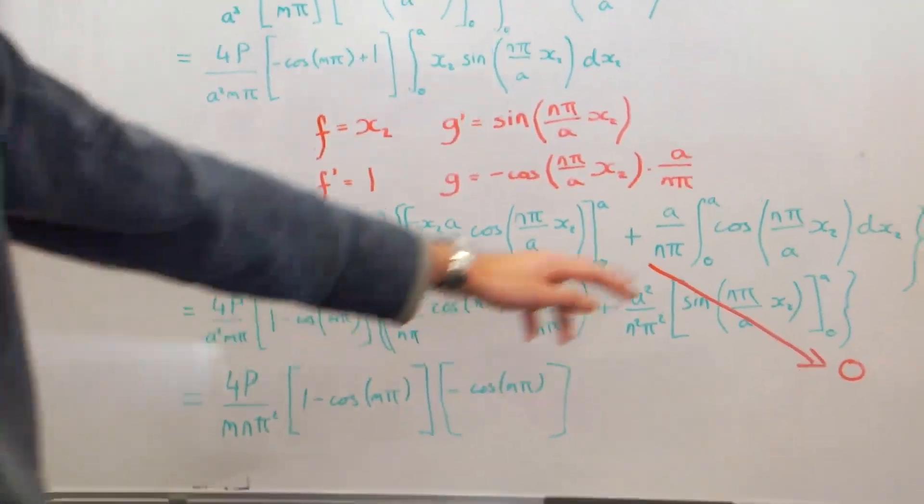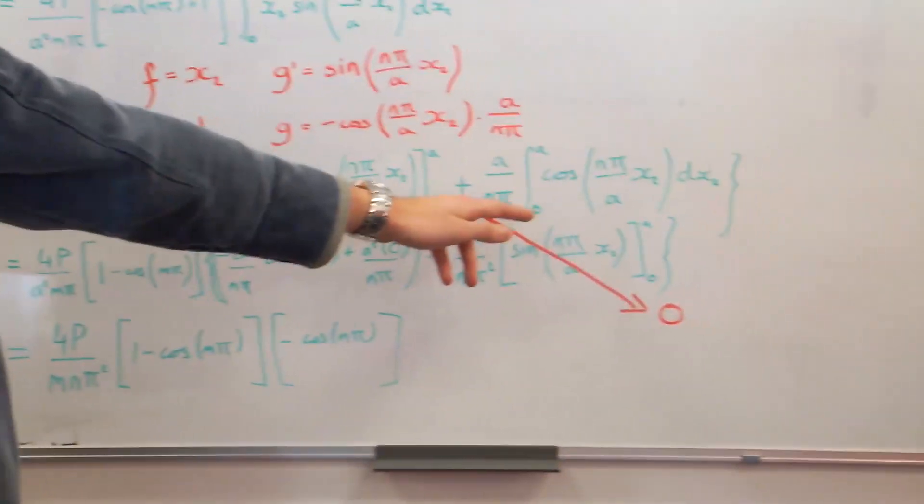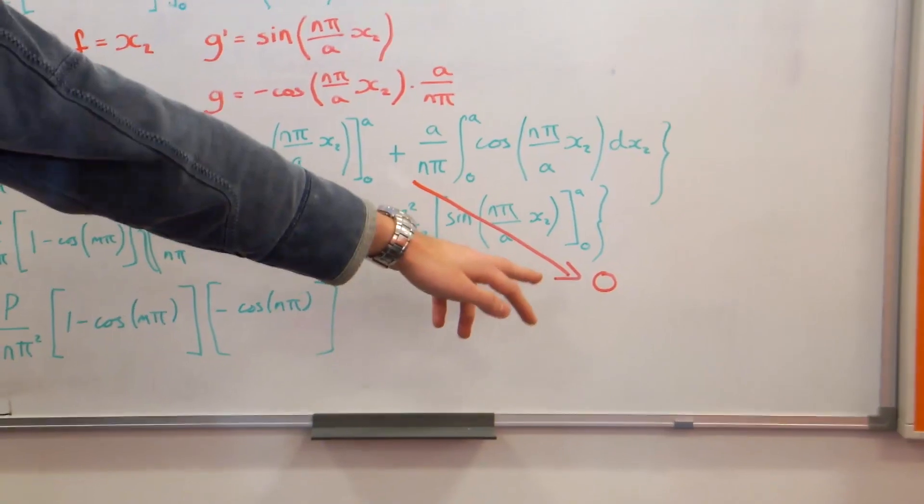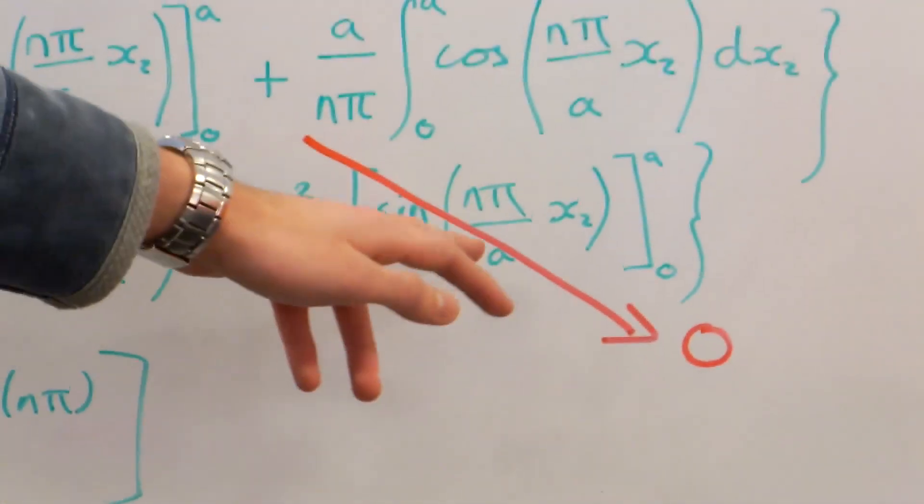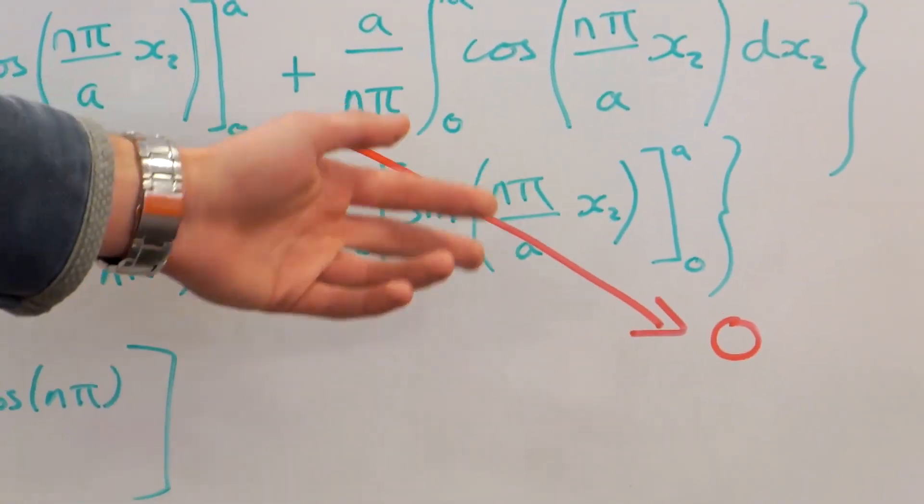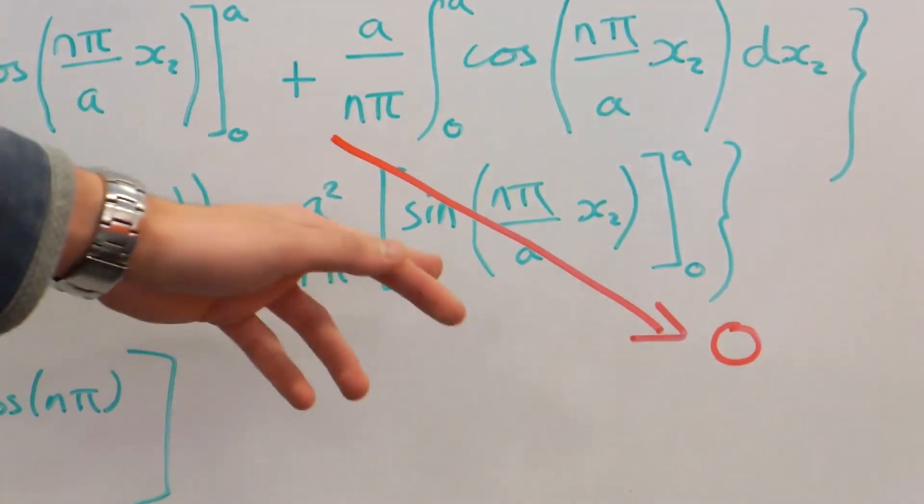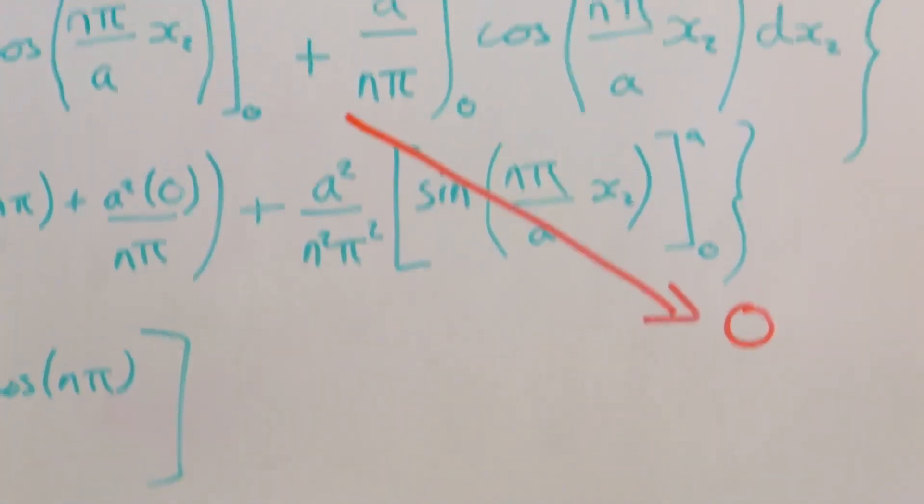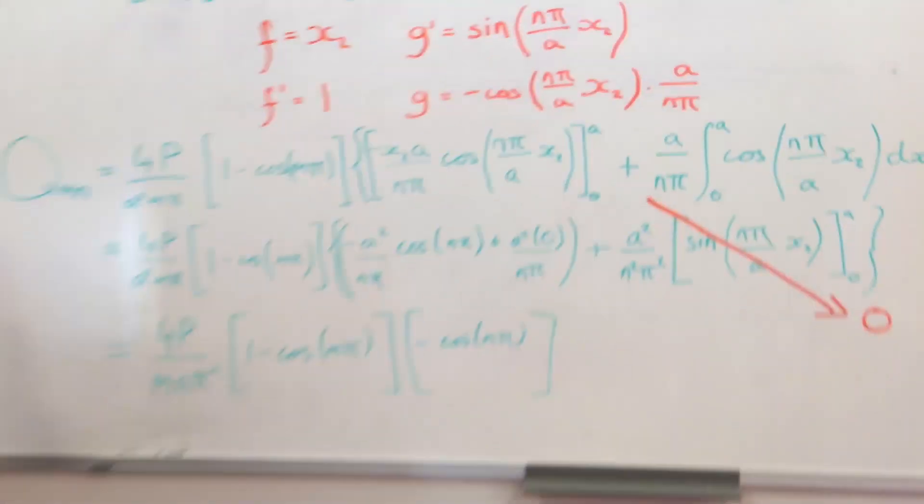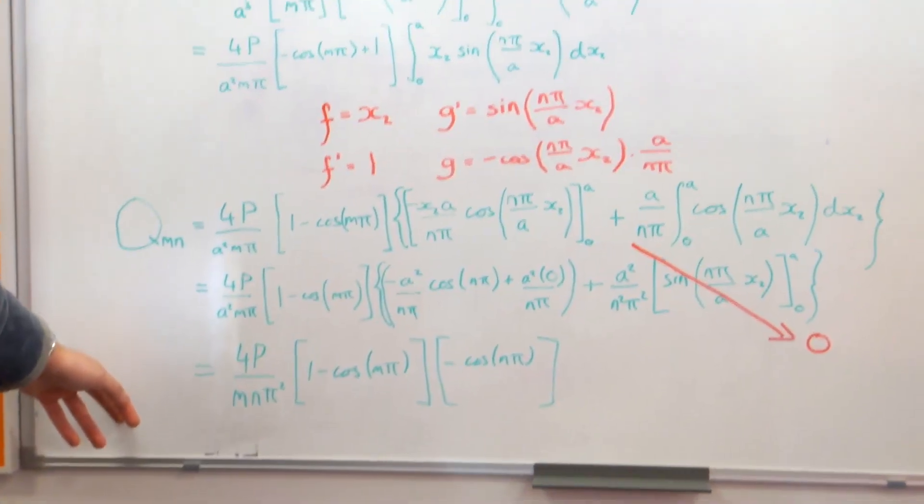And we get this bit, so we integrate that. And we find this term goes to zero because when we put in a at nought, we get sine n pi, which for n being an integer will always make this term go to zero, and sine of nought is also nought. So we end up coming down to here, and this is our Qmn term.